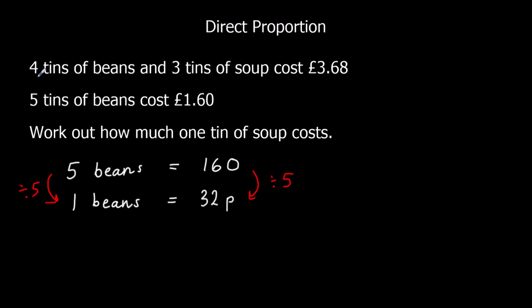And in the top line I've got 4 tins of beans. So if I work out how much 4 tins of beans costs. So I'm going to take how much, well I can do 5 tins of beans, take away 1 tin of beans, or 1 tin of beans multiplied by 4.